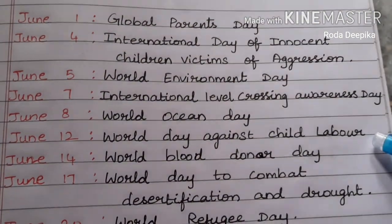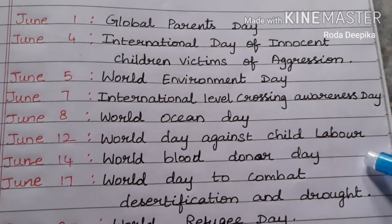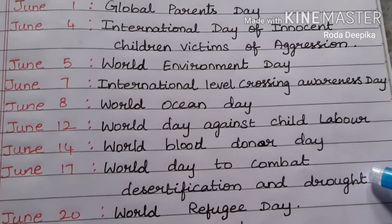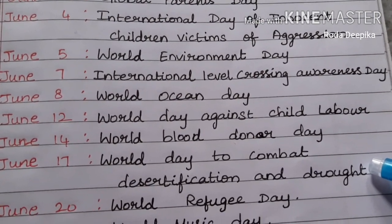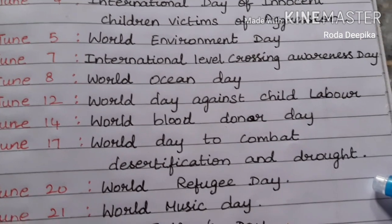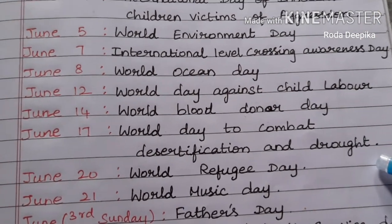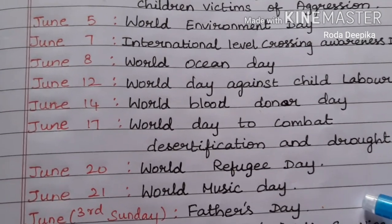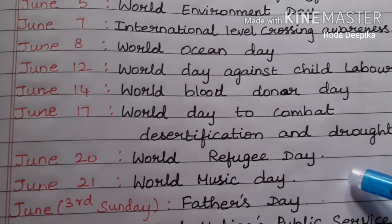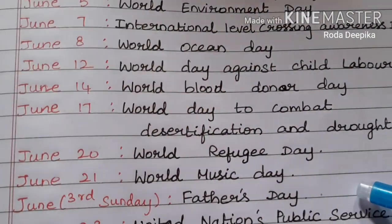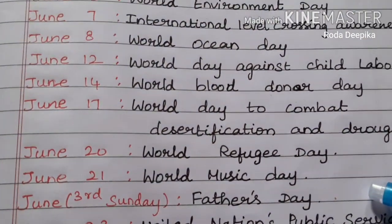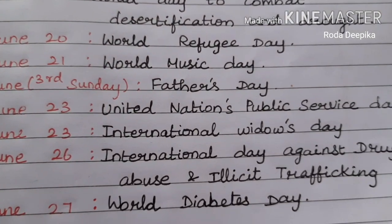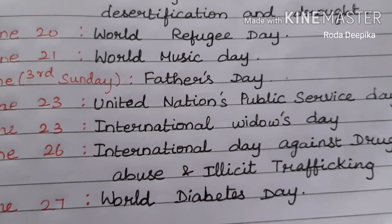June 14: World Blood Donor Day. June 17: World Day to Combat Desertification and Drought. June 21: World Refugee Day. June 21: World Music Day. Third Sunday in June is Father's Day. June 23: United Nations Public Service Day.